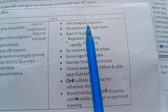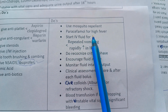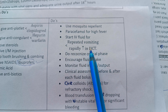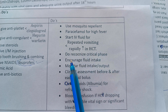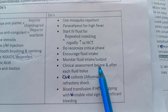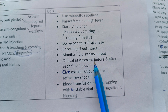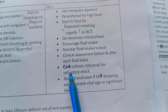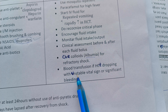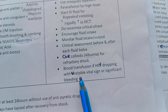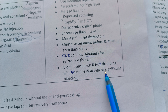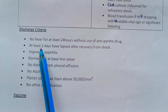Use mosquito repellent. Give paracetamol for high-grade fever. Start IV fluid for repeated vomiting or rapidly increasing HCT. Recognize the critical phase. Encourage fluid intake. Monitor fluid intake and output. Do clinical assessment before and after each fluid bolus. Give colloid or albumin for refractory shock. Give blood transfusion if HCT is dropping with unstable vital signs or significant bleeding.